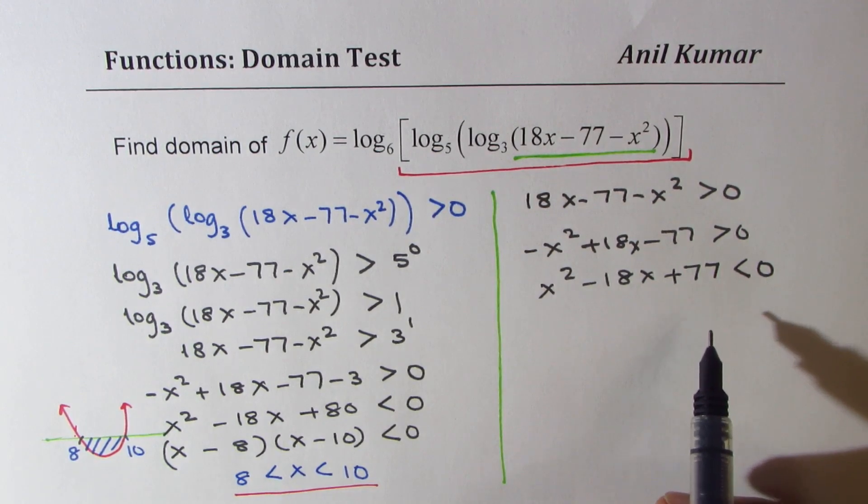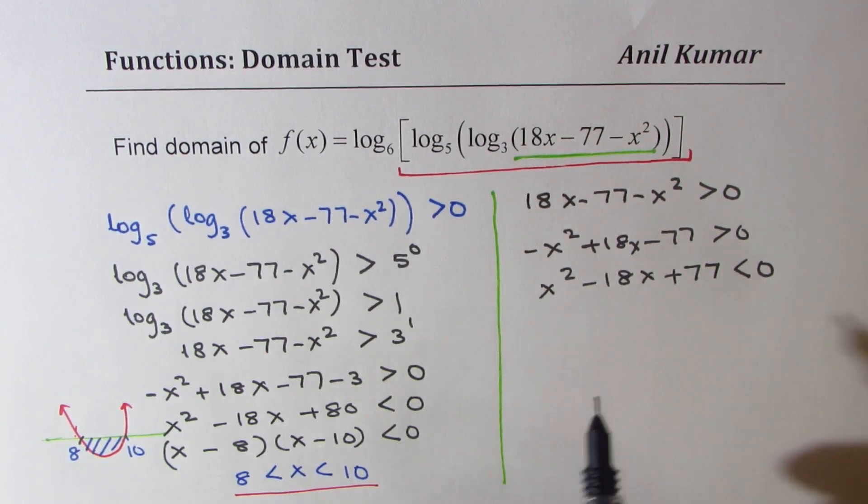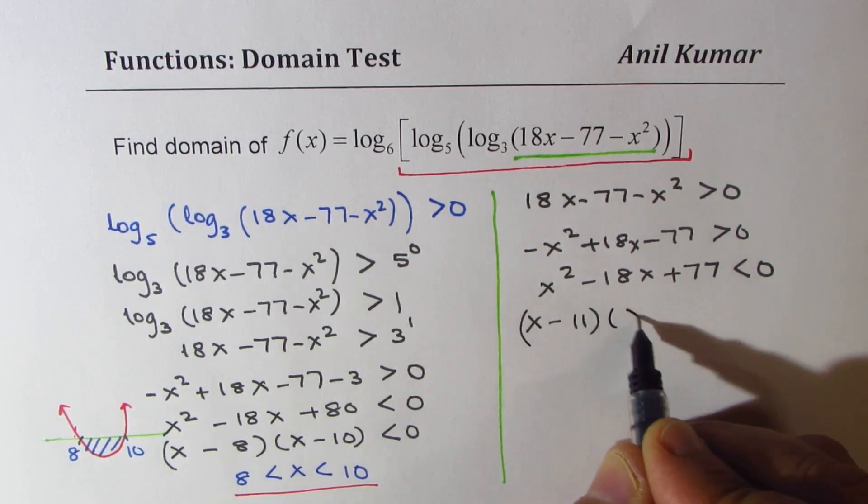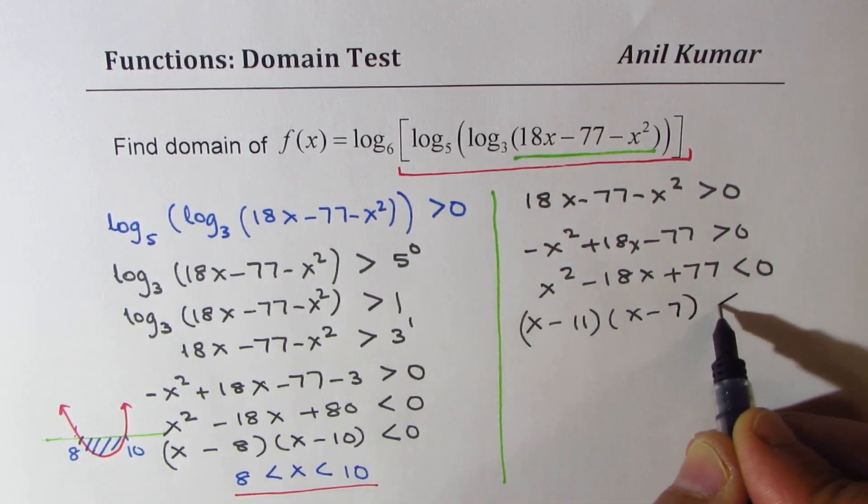77 is 11 times 7 both negative so we could get this as (x - 11) times (x - 7).